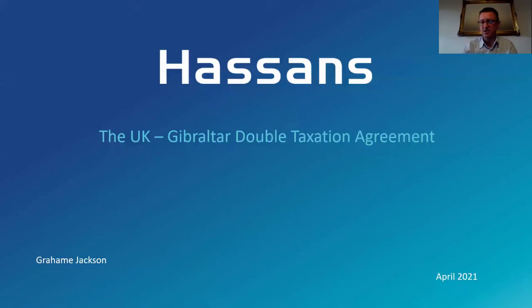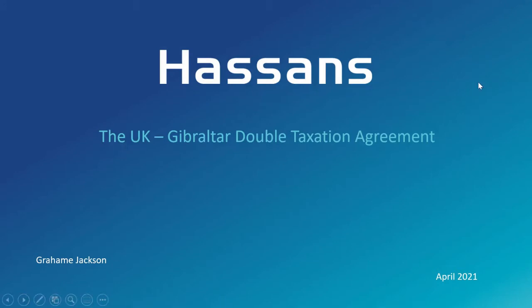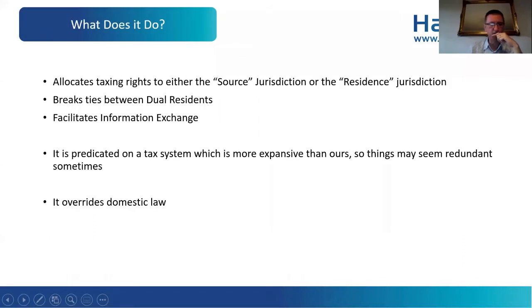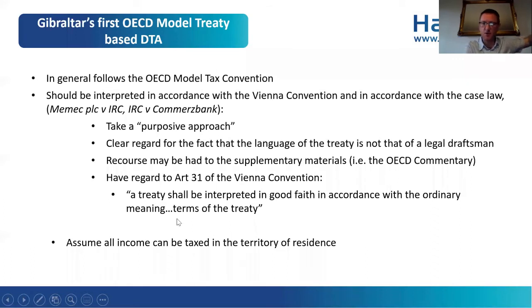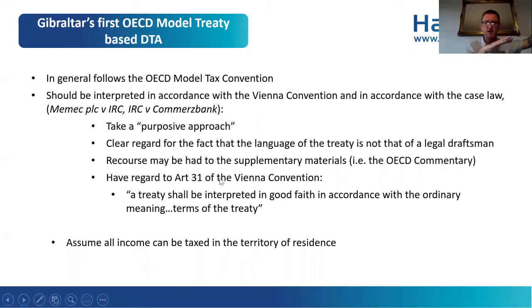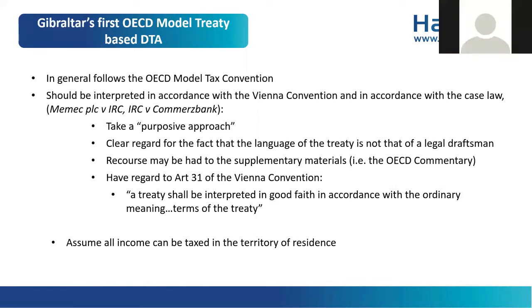We're going to go through the ones that I think would be relevant to you, and then we're going to talk about any issues that arise. We'll also cover what treaties are for, because I think it's important to understand that. Gibraltar has the UK double taxation treaty, and it's important to understand that this treaty follows the OECD model tax convention, which is a global standard of international tax conventions. The language in this treaty is subject to extensive commentary by the OECD.